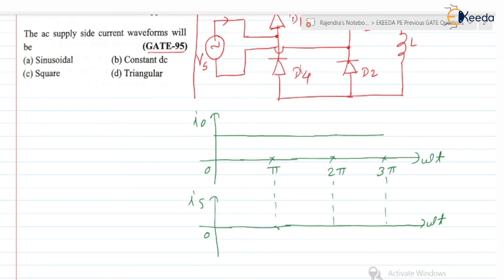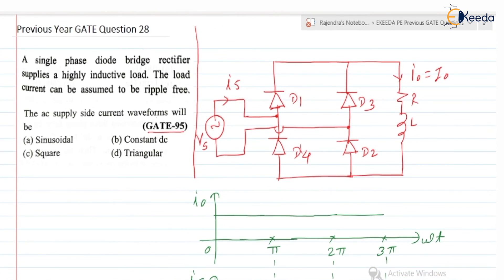So if you check the circuit operation from omega T is equal to 0 to pi, diode D1 and D2 will be in the on state. So when D1, D2 conducts, current will be flowing from Vs, D1, load D2 and again back to the Vs.